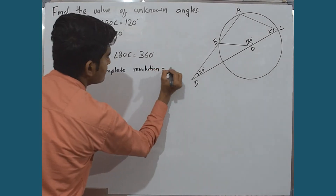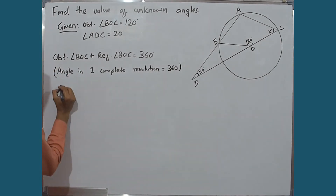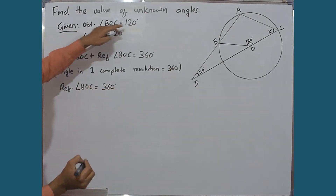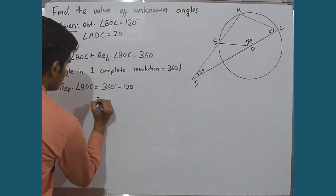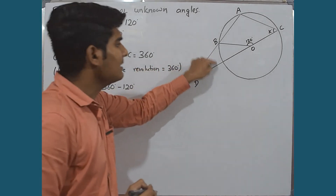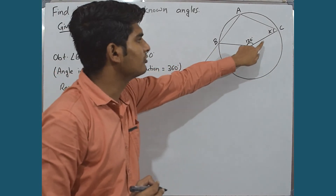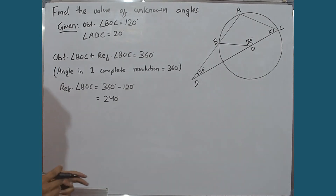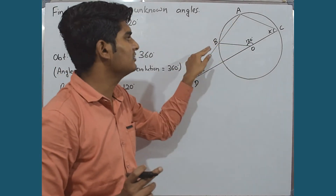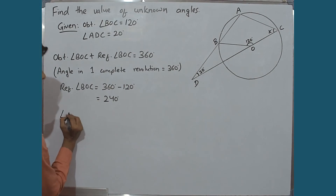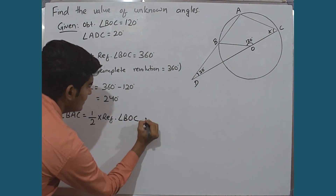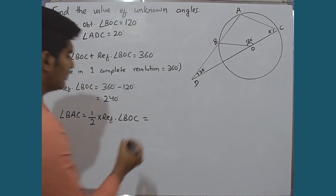Reflex angle BOC equals 360 degrees minus obtuse angle BOC. Since obtuse angle BOC is 120 degrees, reflex angle BOC equals 240 degrees. Arc BC corresponds to the central reflex angle BOC of 240 degrees. By the inscribed angle theorem, the inscribed angle is half the central angle on the same arc. Since reflex angle BOC and inscribed angle BAC both stand on arc BC, angle BAC equals half of 240 degrees, which is 120 degrees.